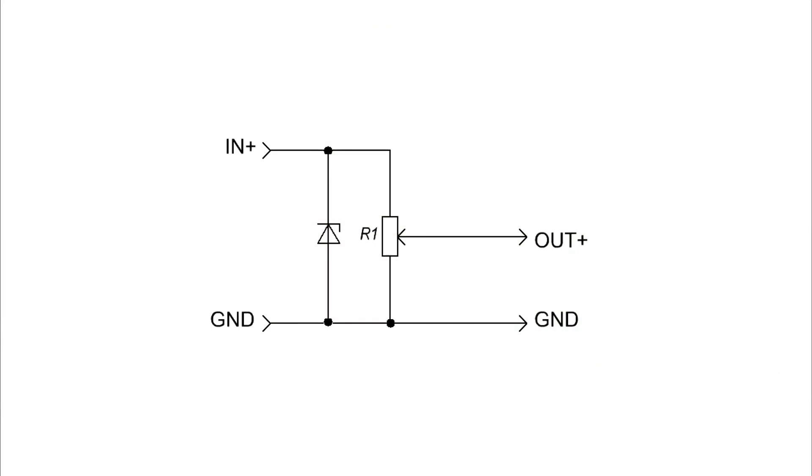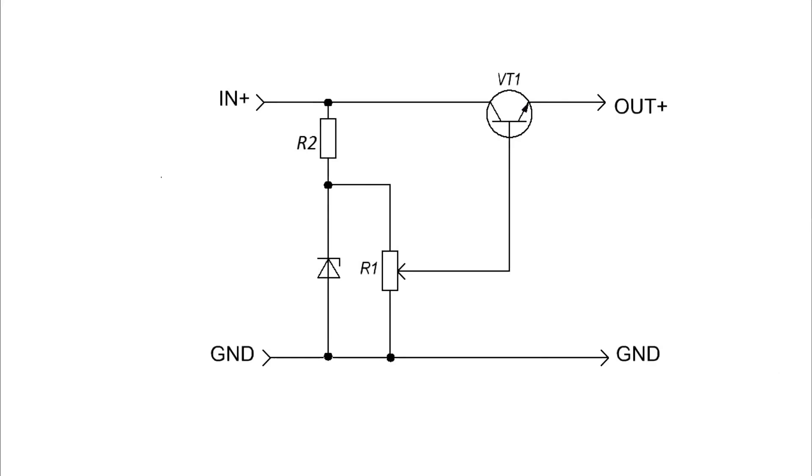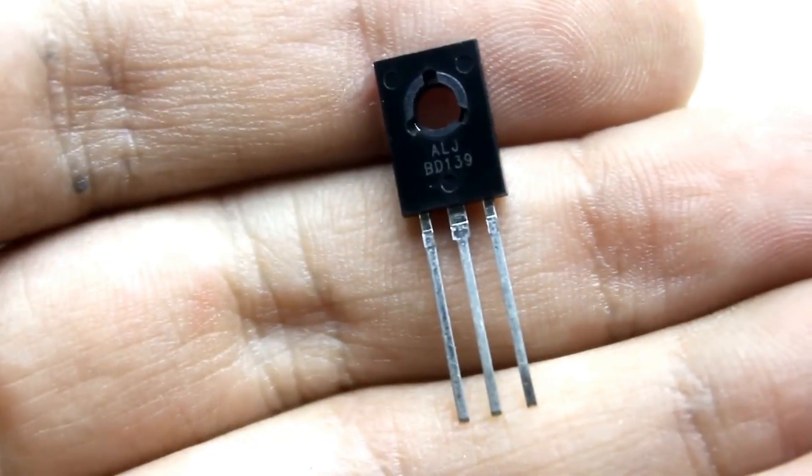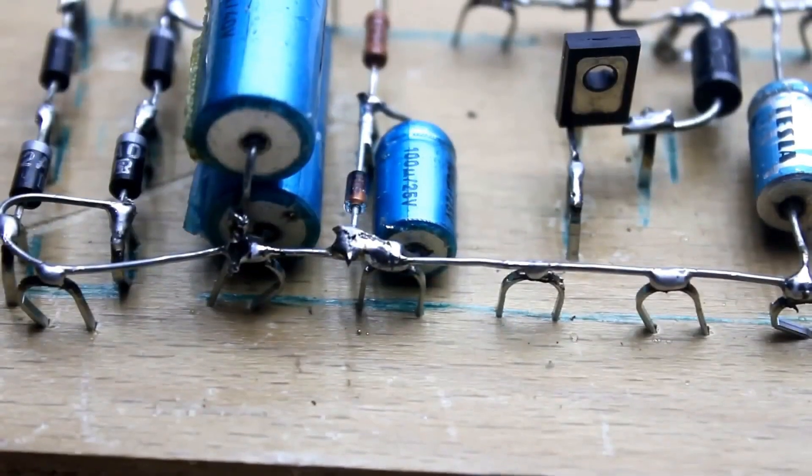But this type of regulator is clearly low power and won't work as a lab power supply. To solve this problem, an amplifying element, a transistor, is added to the circuit. The transistor amplifies the current from the divider, and our circuit can now be used as a low-power voltage regulator.